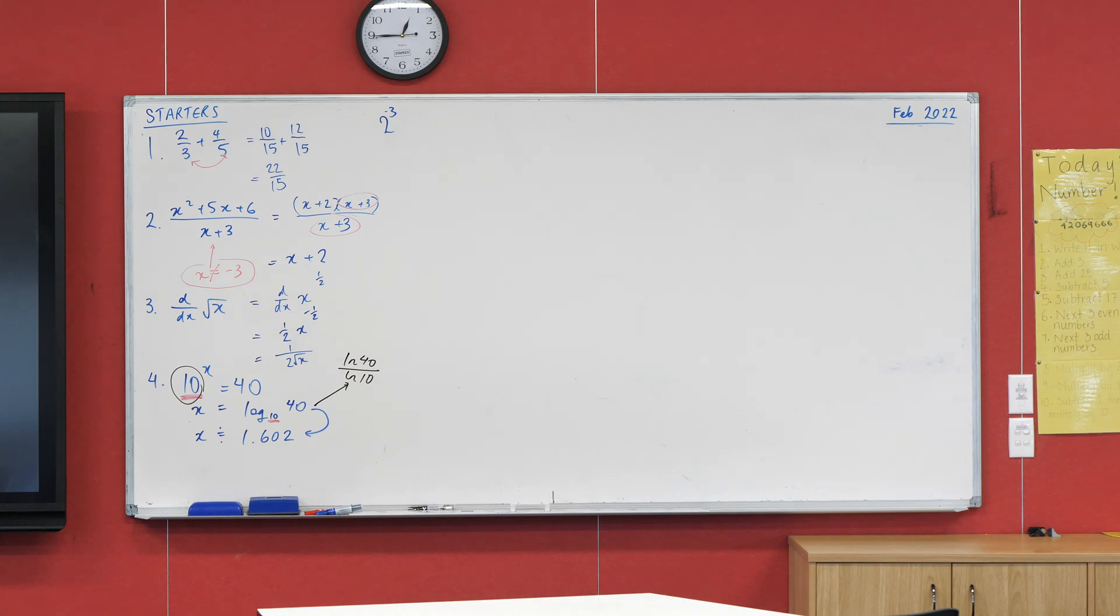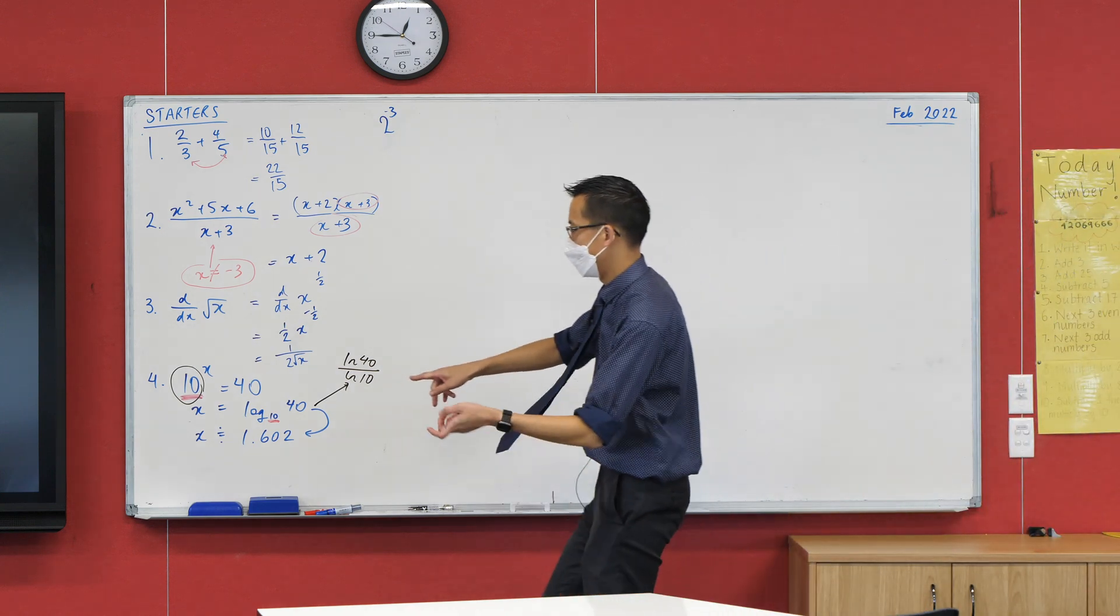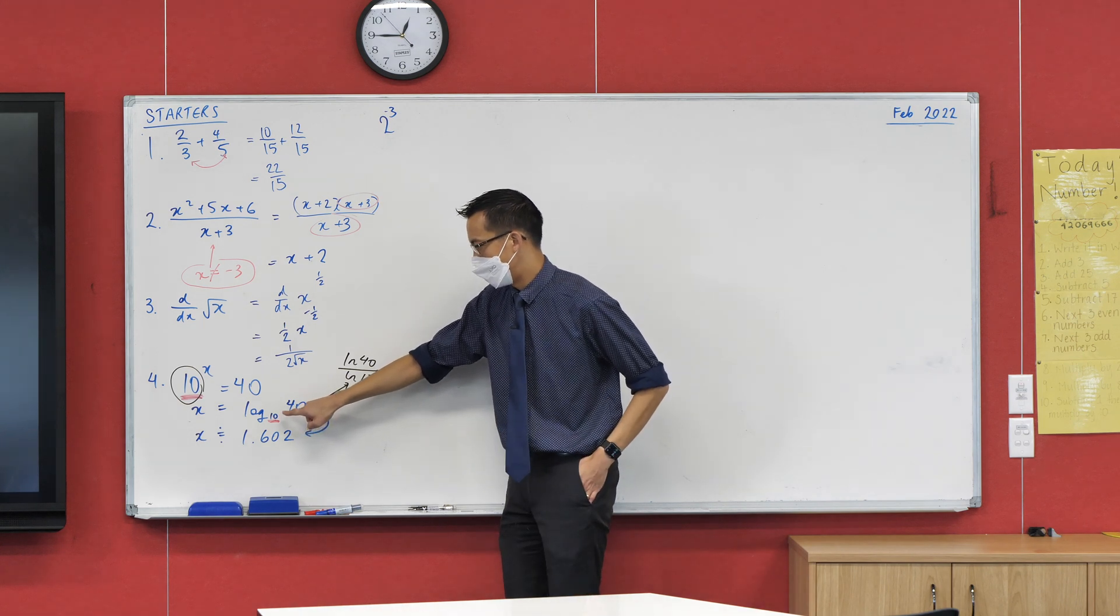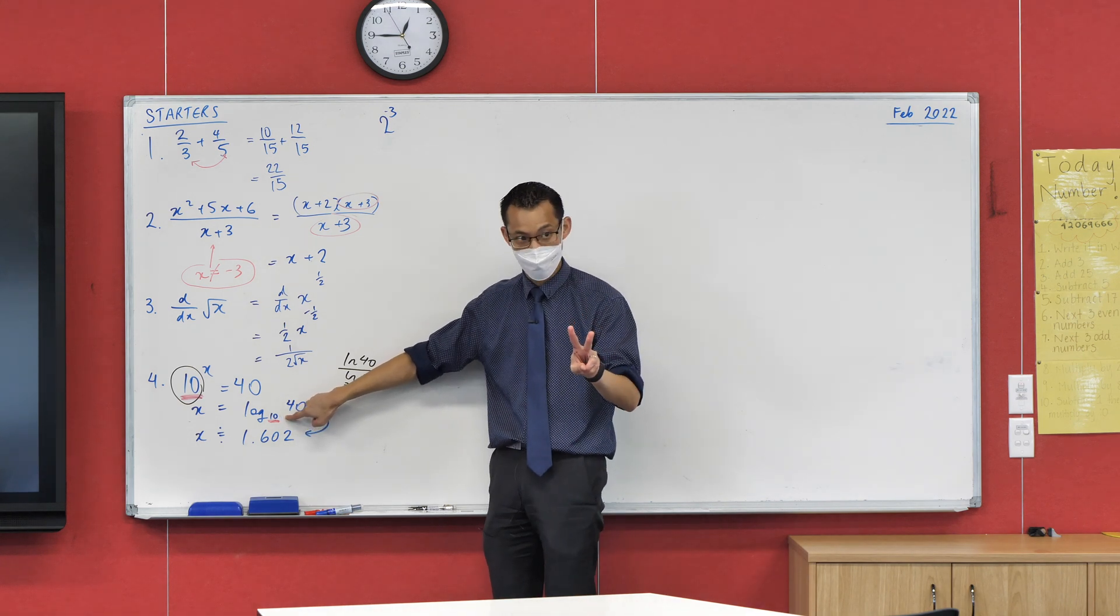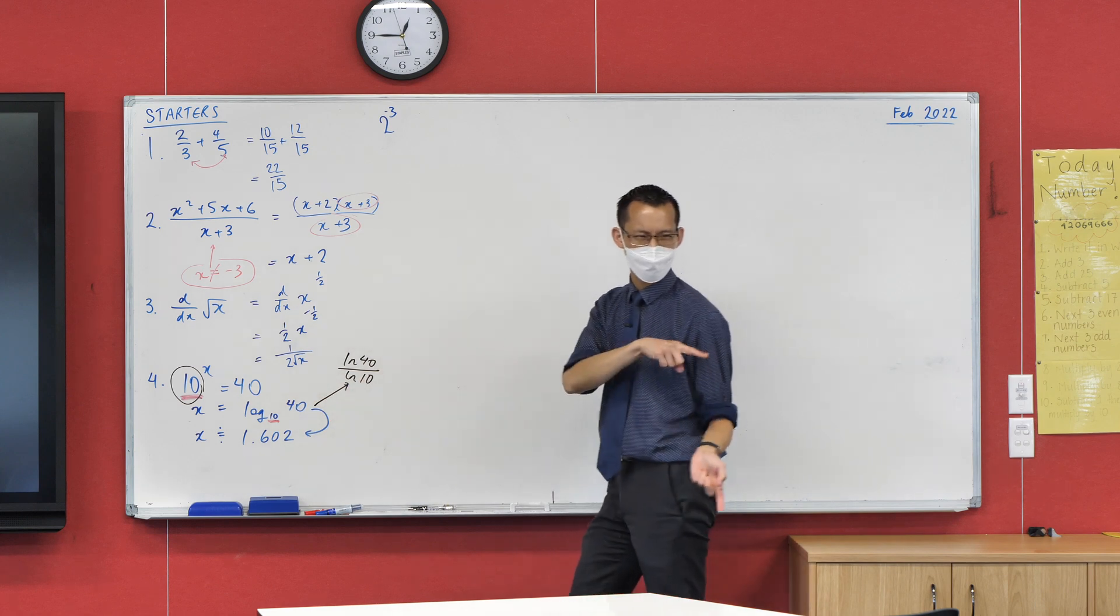I actually chose 10 to try and let you be lazy, because there's a base 10 button on your calculator. Yeah, do you see that? Let me just have a quick look. It'll be just that one right there. So, if we went log 40, press equals for me. Bam, there you go.